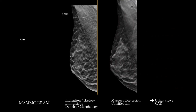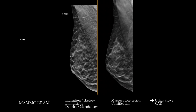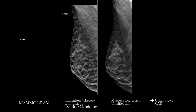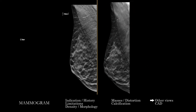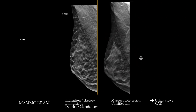If your institution uses tomosynthesis views — and this is increasingly used for benefits in sensitivity and specificity in picking up abnormalities — you can apply a similar search pattern or way of approaching this as you do for the 2D images. You can divide the breast into multiple areas and scroll back and forth through the depth of the breast tissue to make sure you cover the entirety of the breast anatomy.